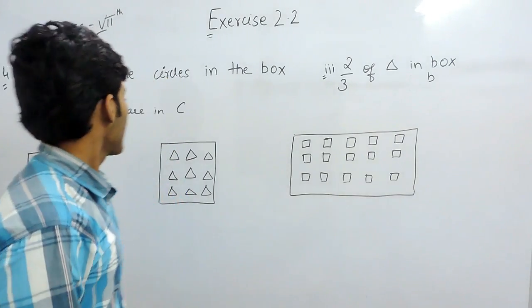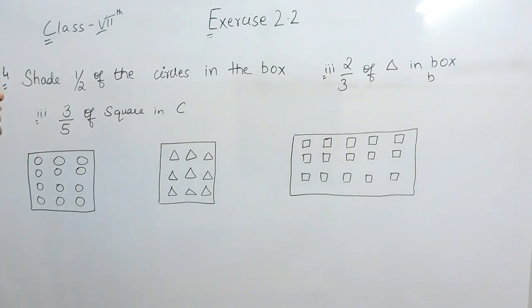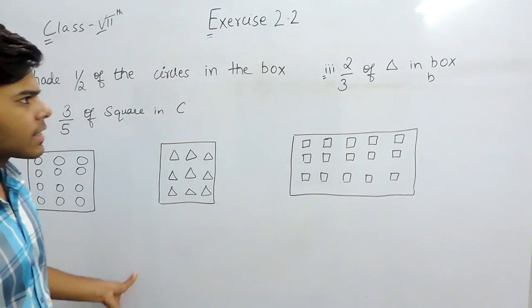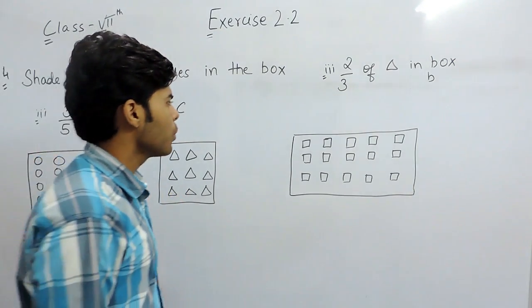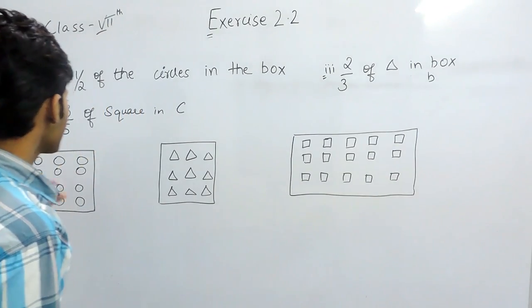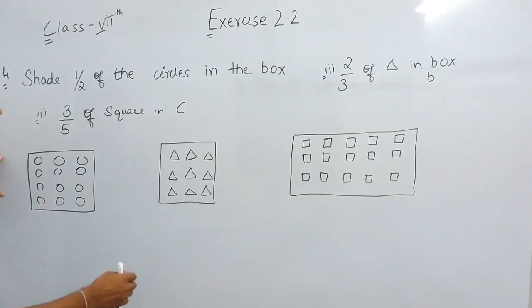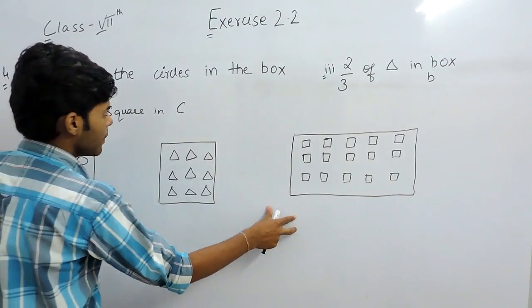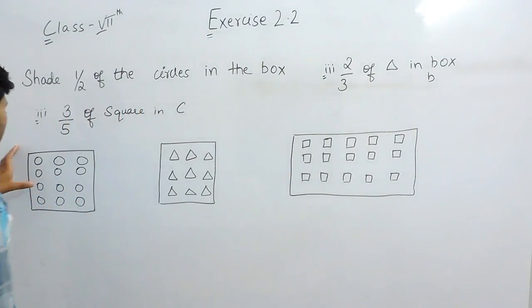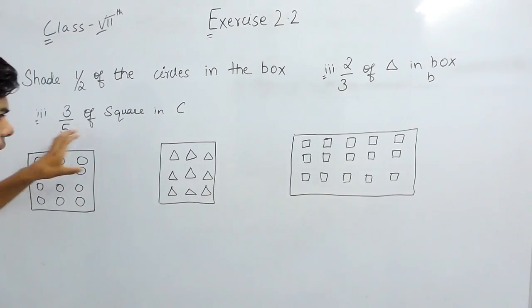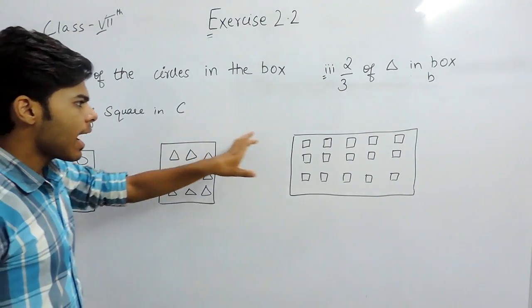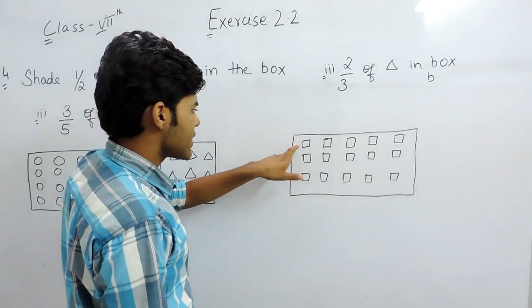Hello! Now we will solve the fourth question of exercise 2.2. In this question there are three boxes given. Each of the following boxes contains circles, triangles and squares.